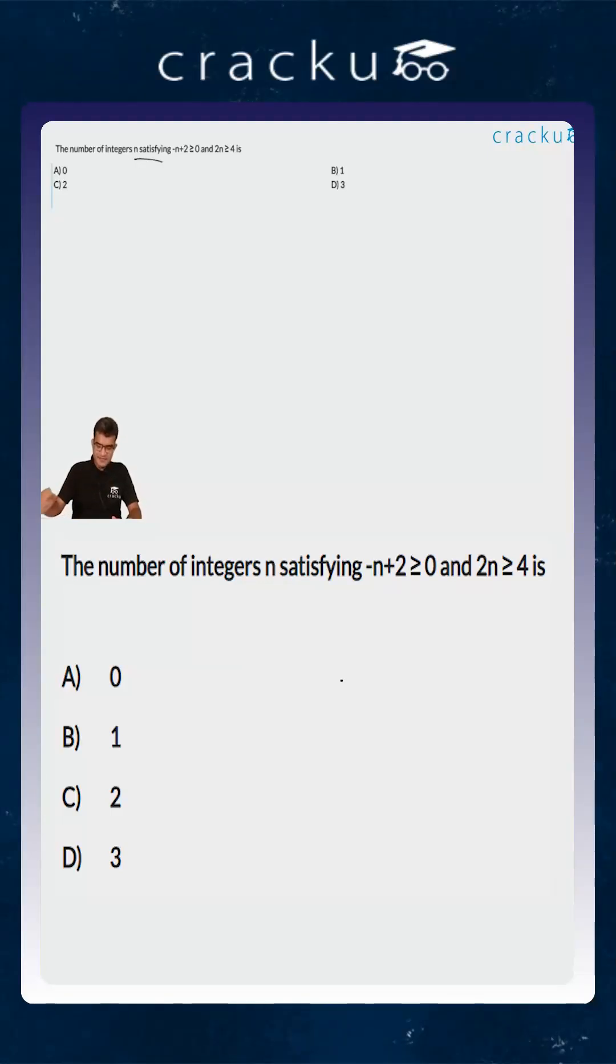The number of integers n satisfying minus n plus 2 greater than or equal to 0 and 2n is greater than or equal to 4 is.